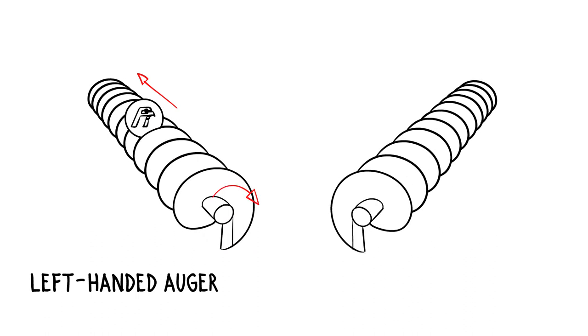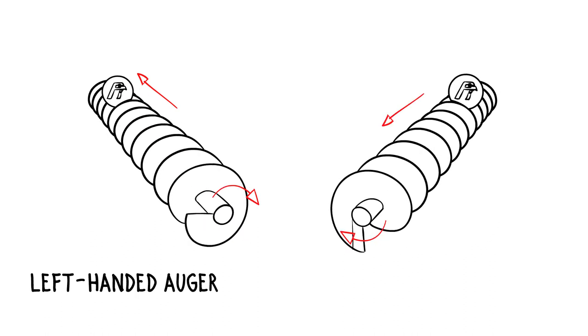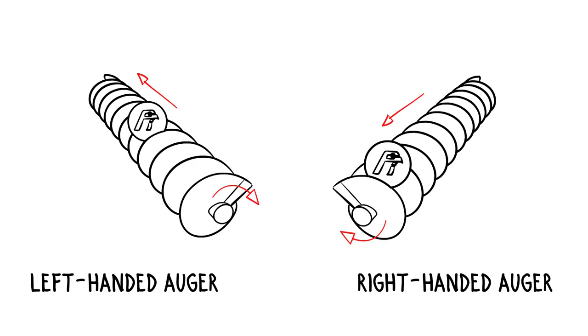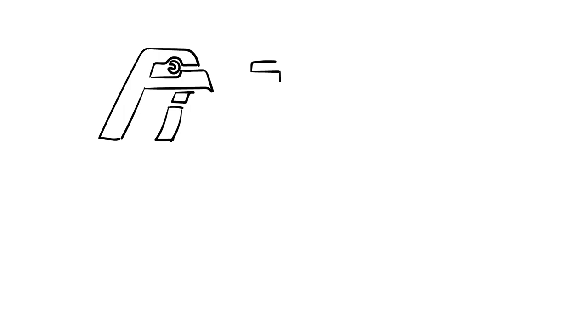If the material is moving towards you and the auger is rotating clockwise, it is a right-handed auger. For additional assistance or more information, please contact us today.